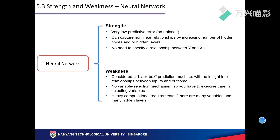As for neural network, it has very low predictor error. Also, it can capture non-linear relationships by increasing the number of hidden nodes and hidden layers. There is no need to specify a relationship between Y and X. It also has some weaknesses: it's considered a black box prediction machine with no insight into the relationship between input and outcome, it has no variable selection so you have to exercise care in selecting variables, and it requires heavy computational requirements if there are many variables and many hidden layers.